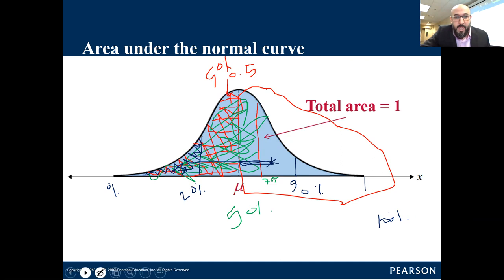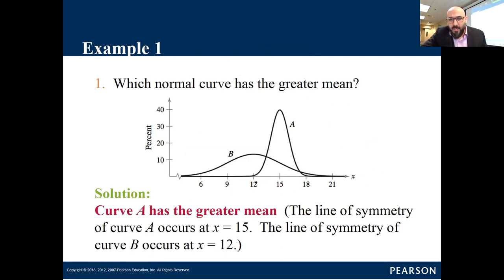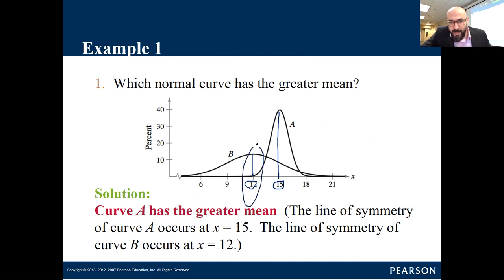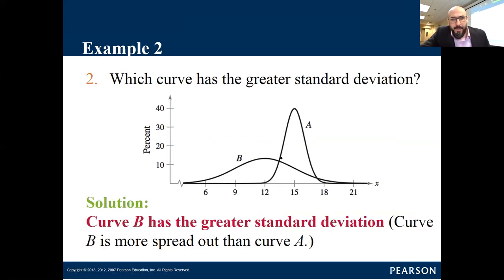We also talked about comparing two normal curves. Curve A has a greater mean because it's shifted to the right, while curve B is shifted to the left with a lower mean. The line of symmetry divides the curve into two equal halves. Regarding peakness: curve A has less variation because the data is very close to the mean, giving a low standard deviation. Curve B has a greater standard deviation because the data is spread wider.